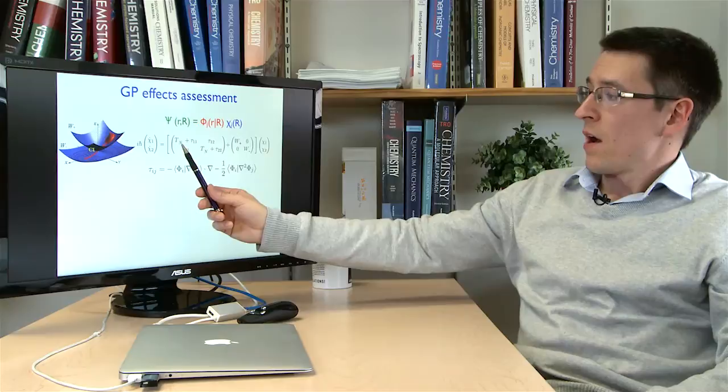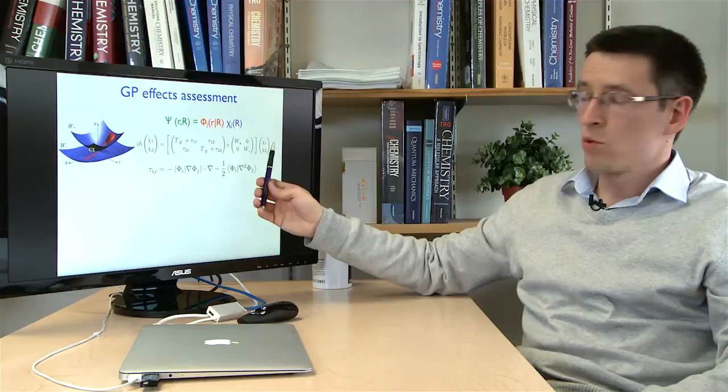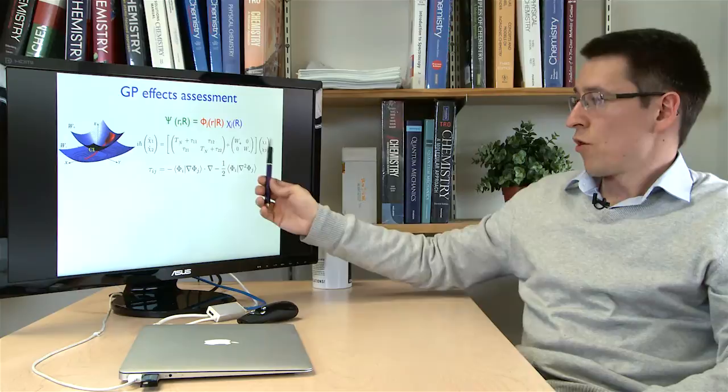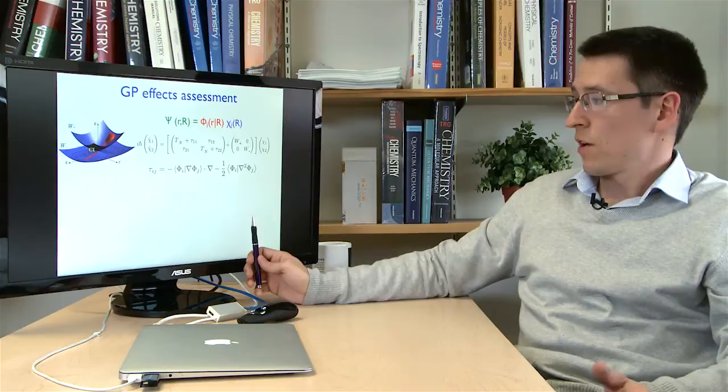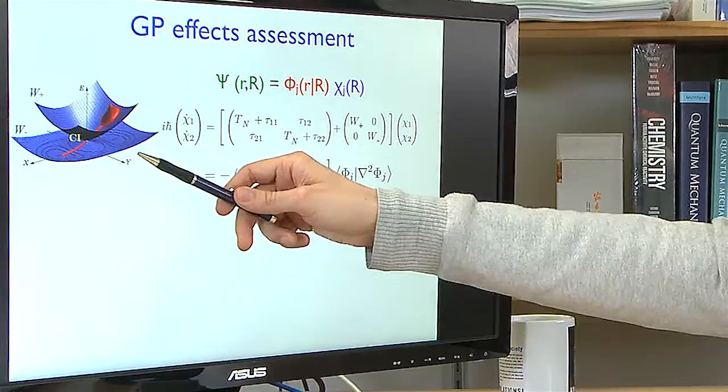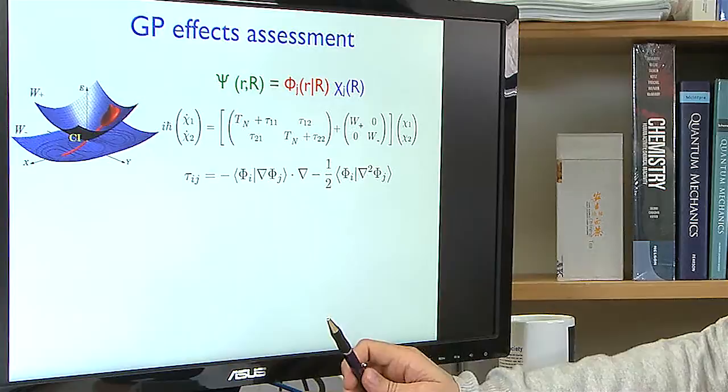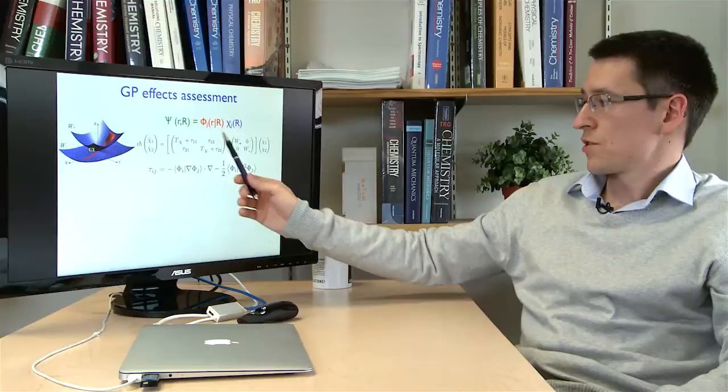How do we assess geometric phase effects in this problem? The total electron-nuclear wave function in the adiabatic representation is a sum over products of electronic adiabatic functions and nuclear chi functions. If we study the nuclear dynamics, we will be monitoring the nuclear part of the problem — chi1 and chi2 components — and we will be solving the time-dependent Schrödinger equation for them. Their evolution can be thought of as a wave packet consisting of two components, chi1 and chi2, evolving on w-plus and w-minus adiabatic states. Transitions are stimulated by the non-adiabatic coupling elements, the off-diagonal tau terms, and there are also diagonal terms.